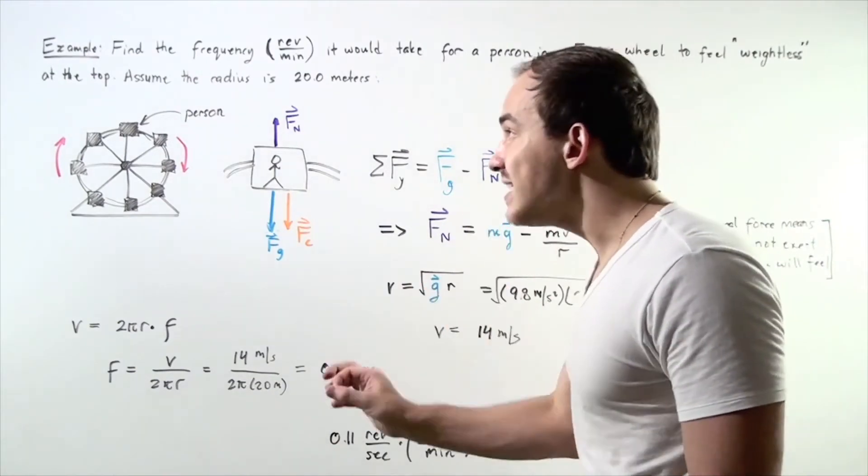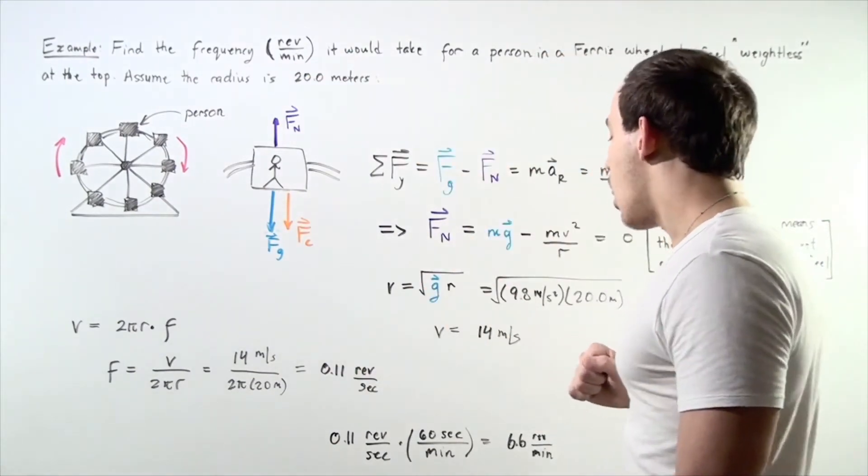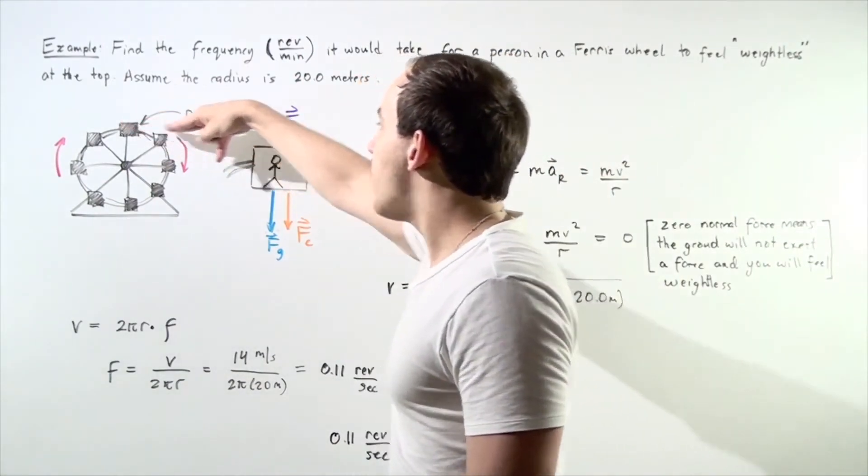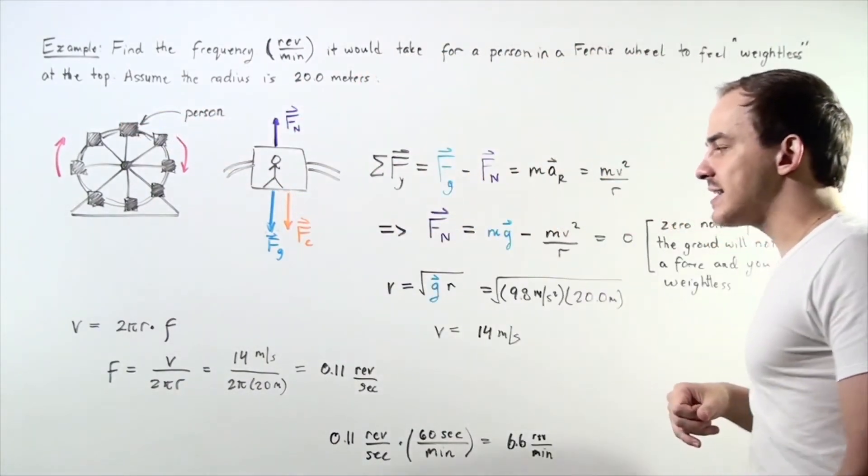Our person has a velocity at the top of our arc of 14 meters per second that points in the positive direction along the x-axis.